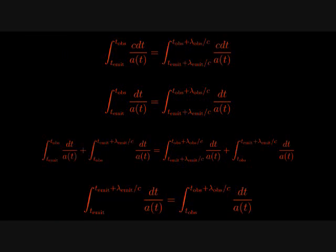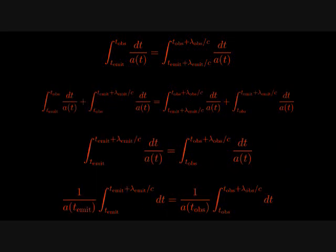Note that the integrals on each side of the equation are over a single period of the photon. A typical period of a photon is around 10 to the negative 14 seconds. Since this is incredibly short compared to the time scales on which the scale factor changes, we can pretend that the scale factor is constant and take it out of the integral.